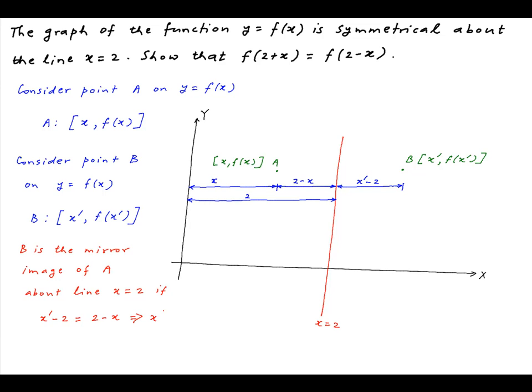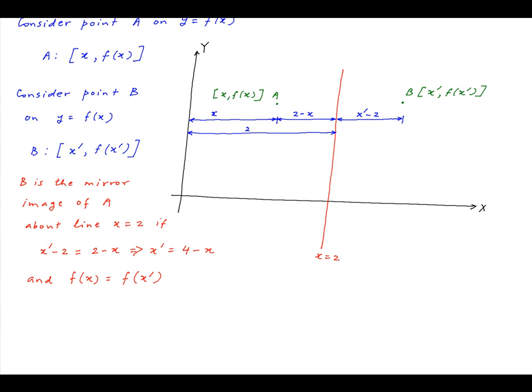In other words, 2 - x = x' - 2, which implies that x' = 4 - x. The second condition for A and B to be a mirror image about the line x = 2 is that the distance of A and B from the x-axis is equal, which implies that f(x) = f(x').